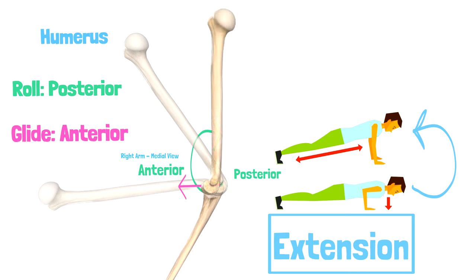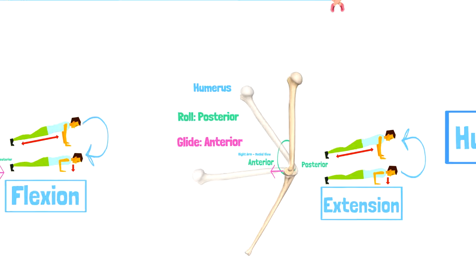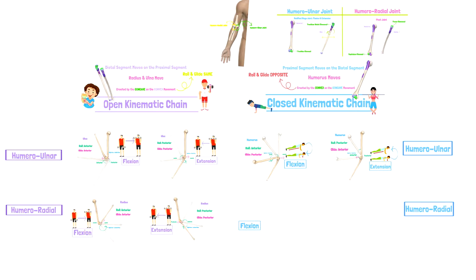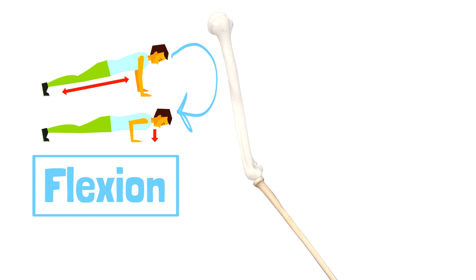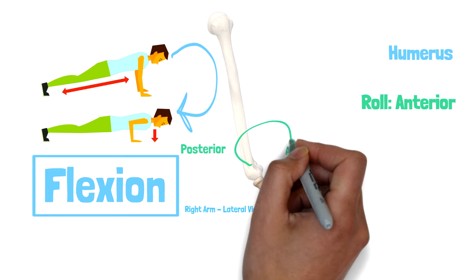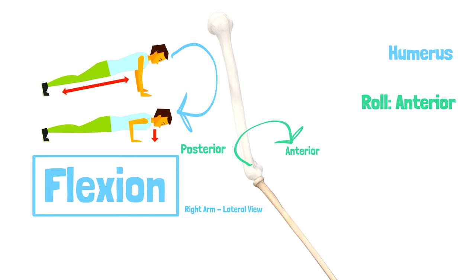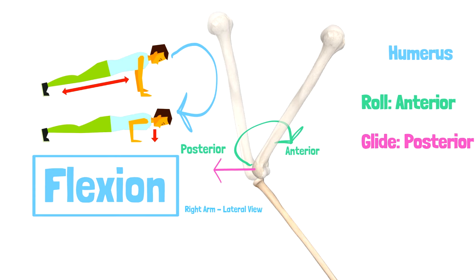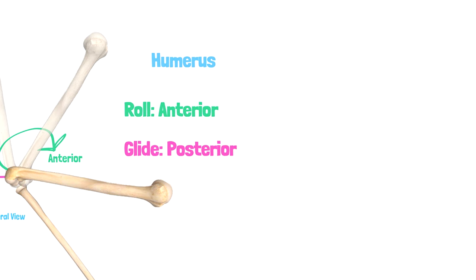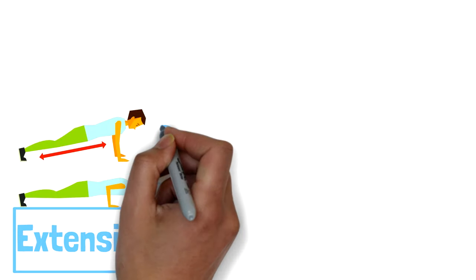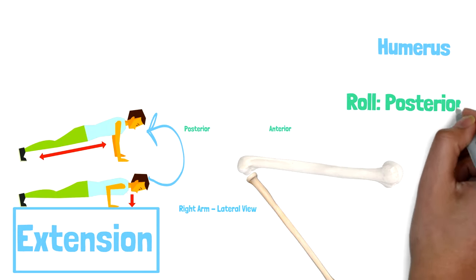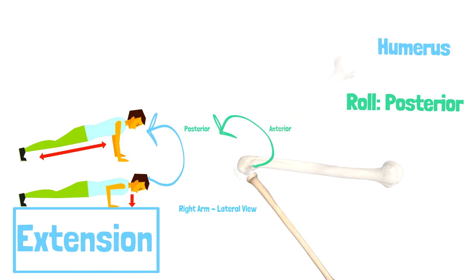Now let's examine humeral radial arthrokinematics. Since we observe a convex capitulum moving on a concave radial head, the roll and glide will occur in opposite directions. With flexion, observe the humerus roll and glide posteriorly. With extension, observe the humerus roll posteriorly and glide anteriorly.